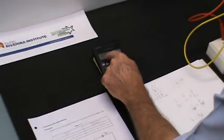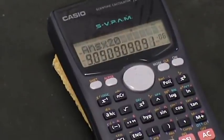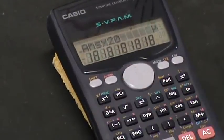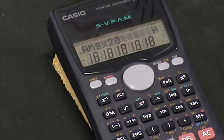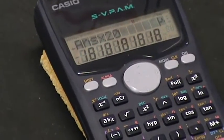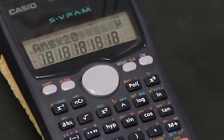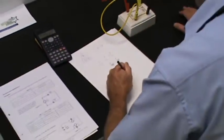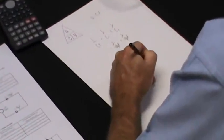9 microfarad times 20 volts equals how much charge? We've already got the 9 microfarad, 9.09 microfarad from before, times it by 20 equals 181.81 or 82 microcoulombs. We'll call that 181.8 microcoulombs.